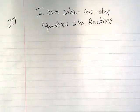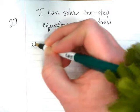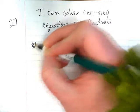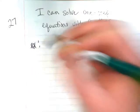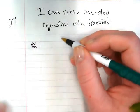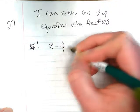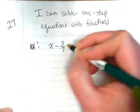We're going to do a couple of examples. So let's write EX up here. And I want to start with example X minus 3 7ths is equal to 5 7ths.